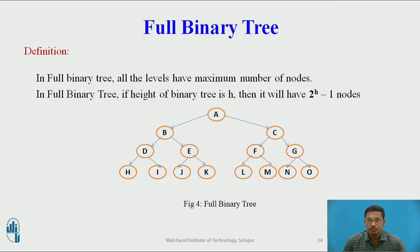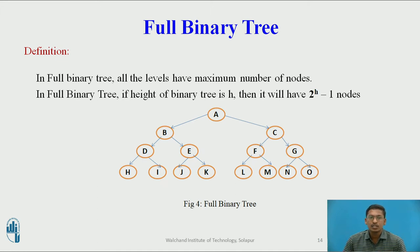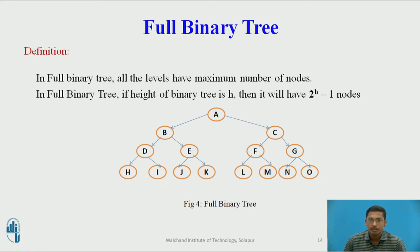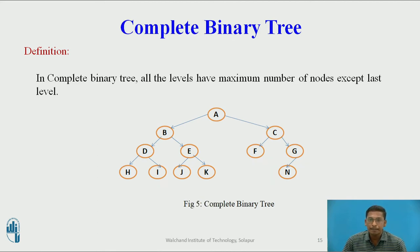Next definition is full binary tree. In a full binary tree, all levels have the maximum number of nodes. We have seen the property that the maximum number of nodes at any level i is 2 raised to i. So in a full binary tree all levels are filled with the maximum number of nodes. If the height of a binary tree is h, then it will have 2 raised to h minus 1 nodes. This diagram is an example of a full binary tree.